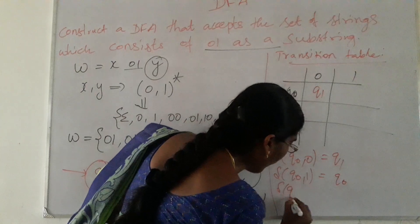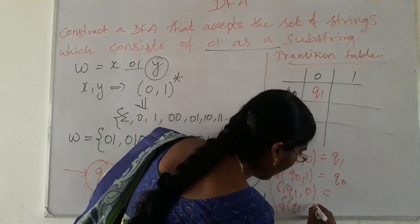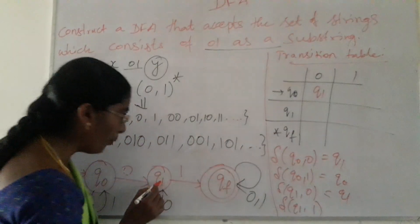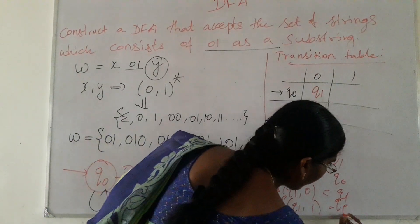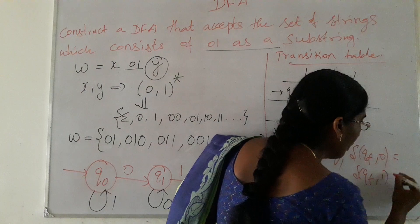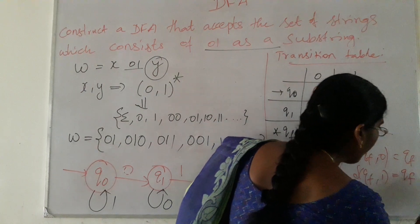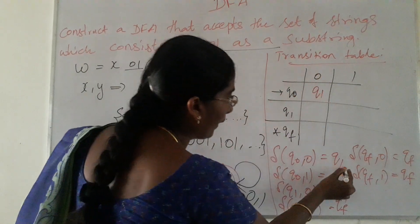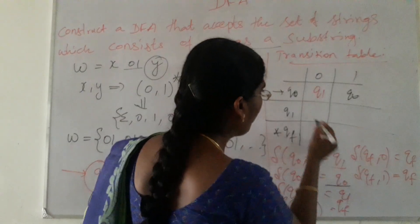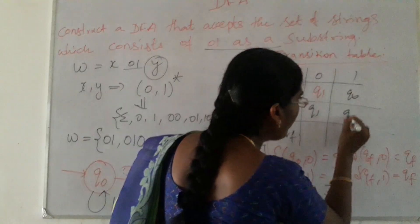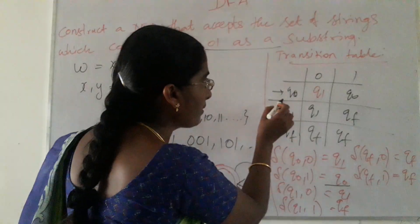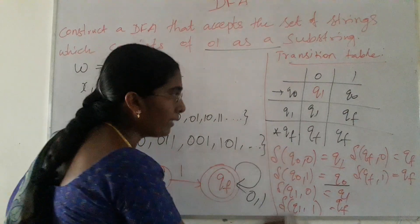Continuing the transition table: δ(Q1, 1) = QF (forward to final state). δ(QF, 0) = QF and δ(QF, 1) = QF (self-transitions at the final state). Completing the table: Q0 on '0' → Q1, Q0 on '1' → Q0, Q1 on '0' → Q1, Q1 on '1' → QF, QF on '0' → QF, QF on '1' → QF. This is the complete transition table and transition diagram.